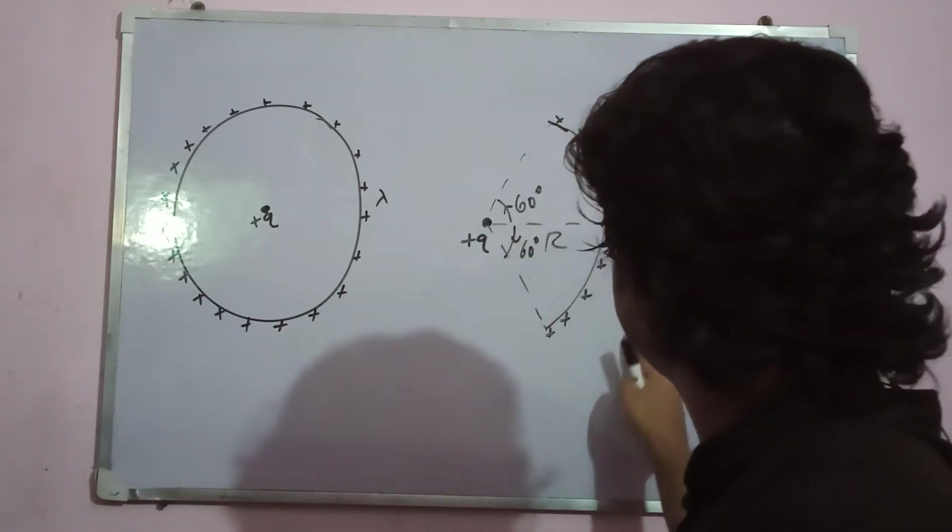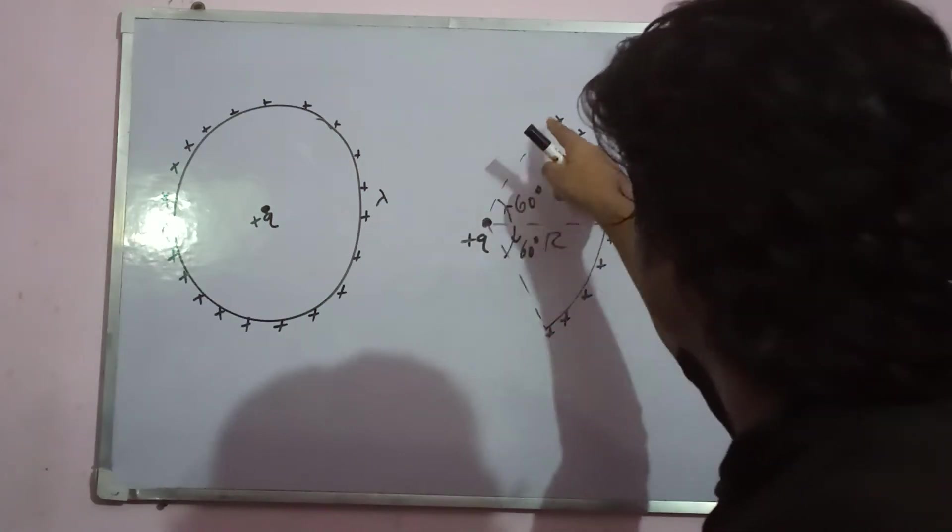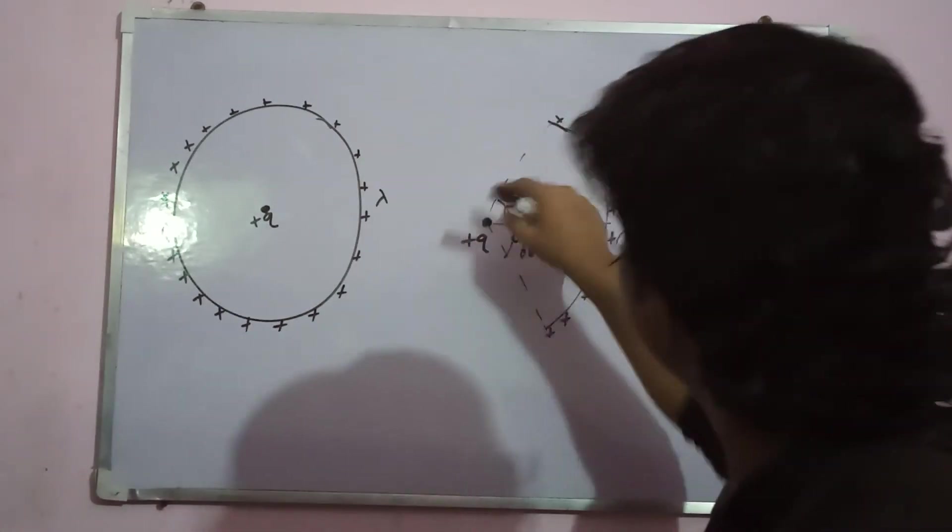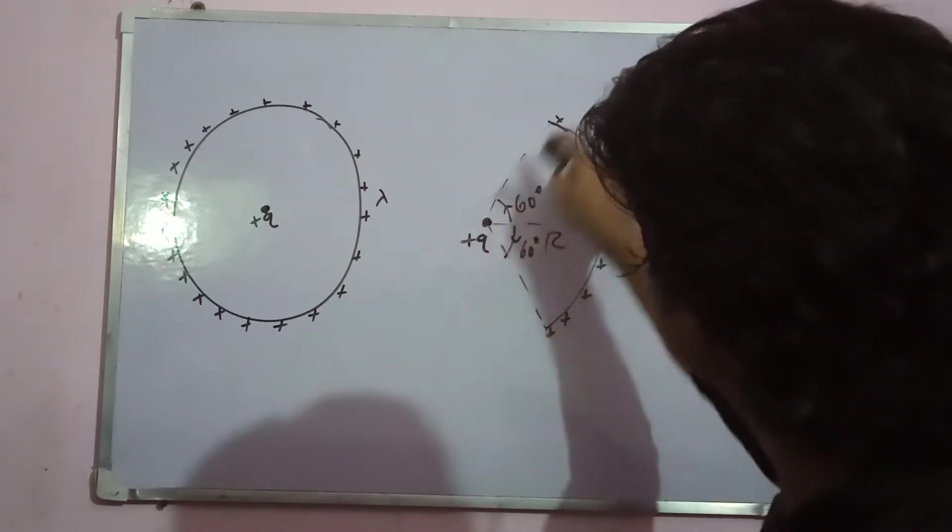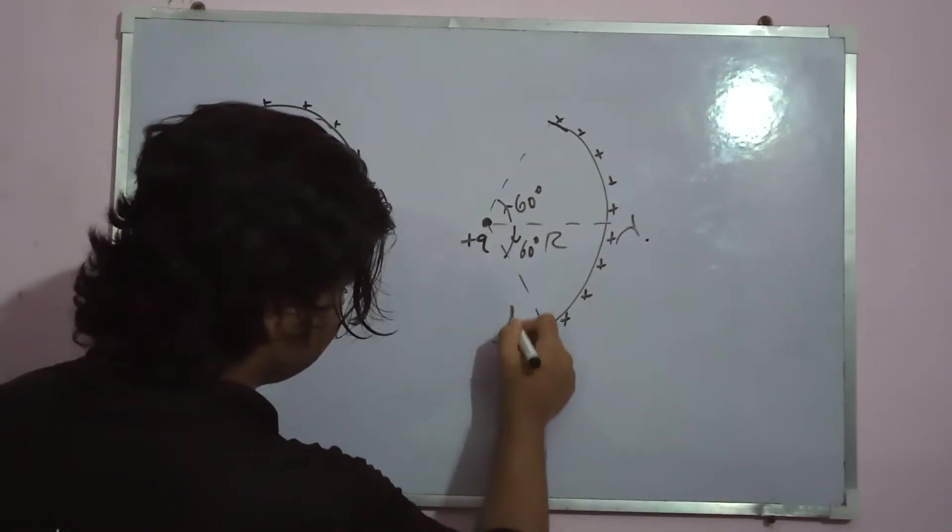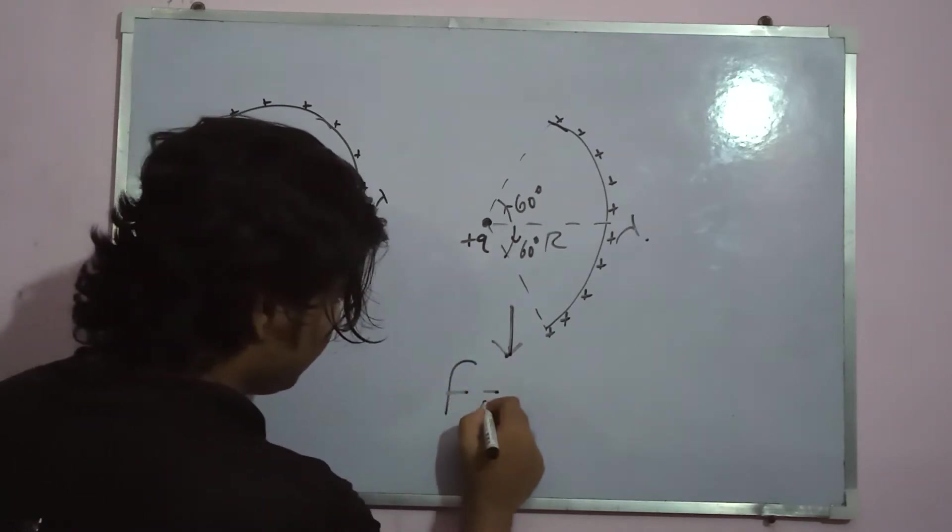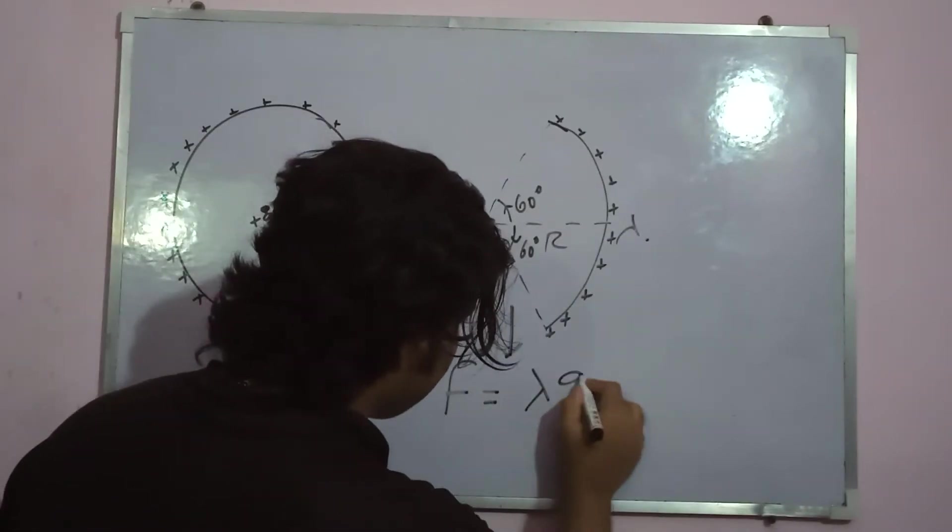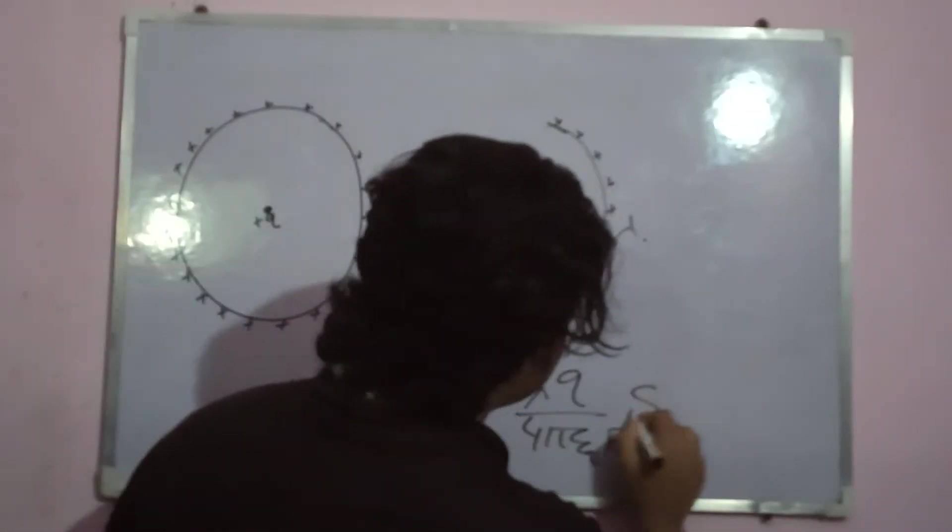Here, this is a circular track or circular arc making an angle of 60 degree to this side and 60 degree to this side with a positive charge placed at the center of this arc. So, what will be the force experienced by this plus charge by this setup? Let's come here.